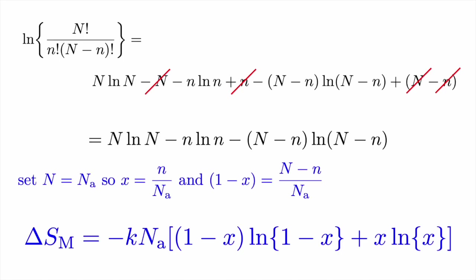In the last lecture we came up with an expression for the entropy of mixing — the change in the entropy of mixing when we mix n_A atoms with N minus n_B atoms on a lattice which has N sites. We worked out the number of ways in which we can arrange the n_B atoms on those sites as N factorial over n_B factorial times (N minus n_B) factorial, and we take the logarithm of the number of arrangements because entropy is an additive function. So if I take two bodies with different entropies and put them together, the total entropy is the sum of the individual entropies.